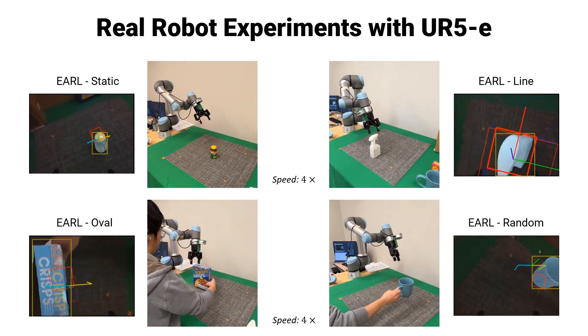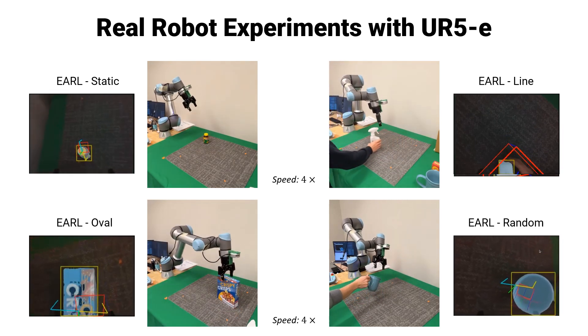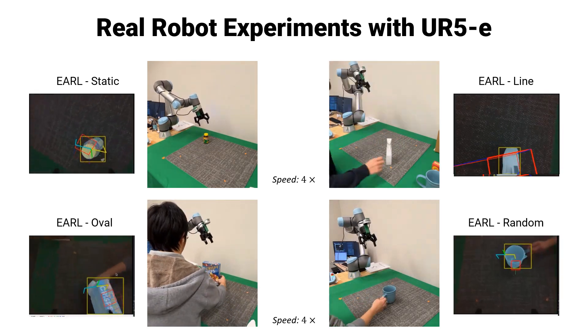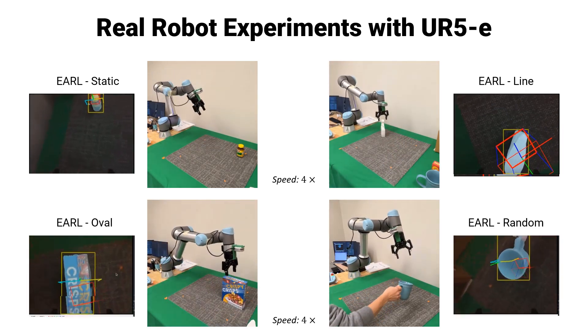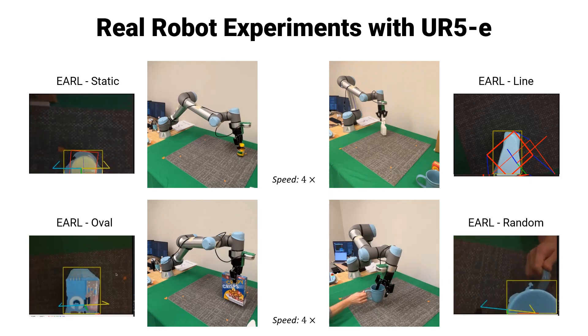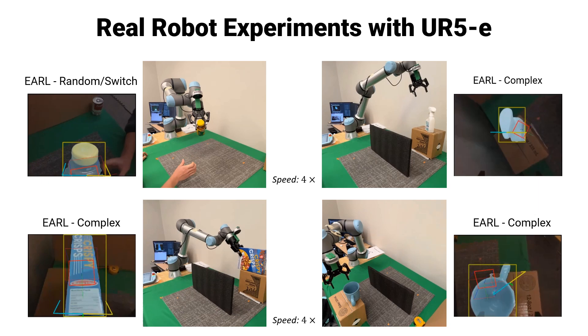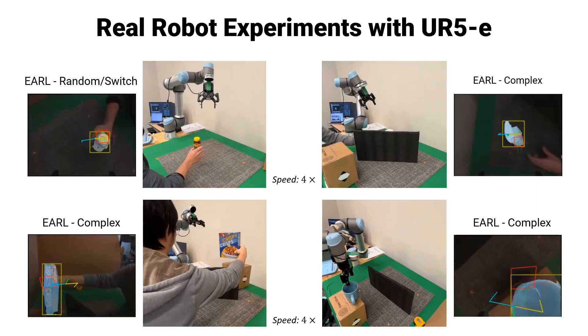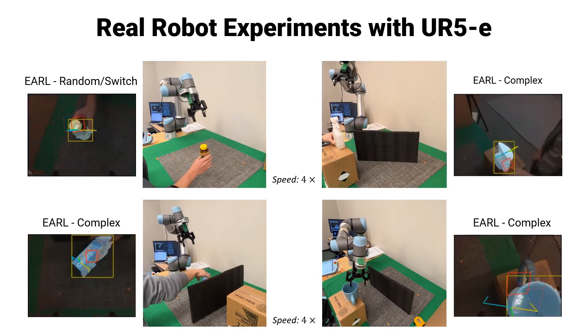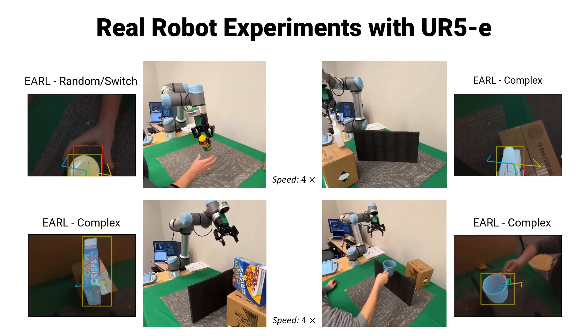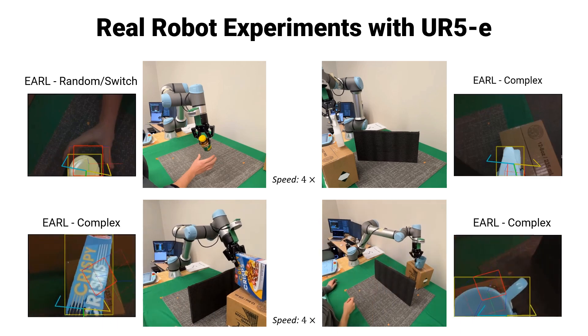Here are some clips showing our method can handle different object motion. Our method can work in a more complex setup, and this black wall also demonstrated why we need a camera on hand, as a static external camera may not see what is happening on the other side.